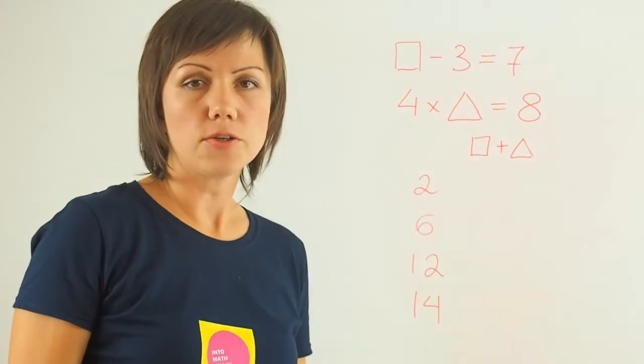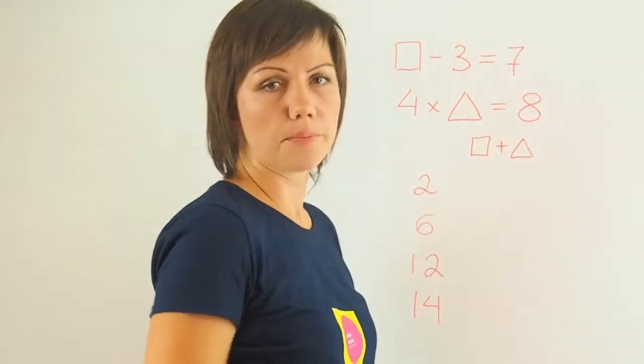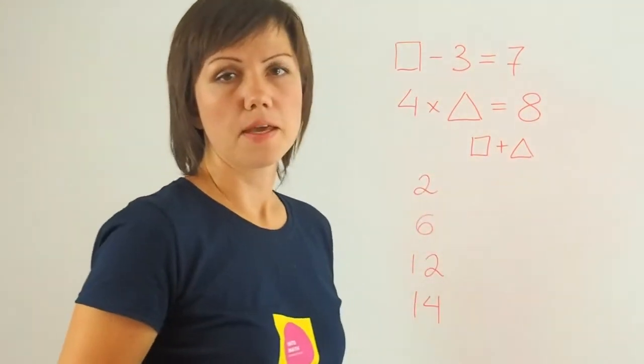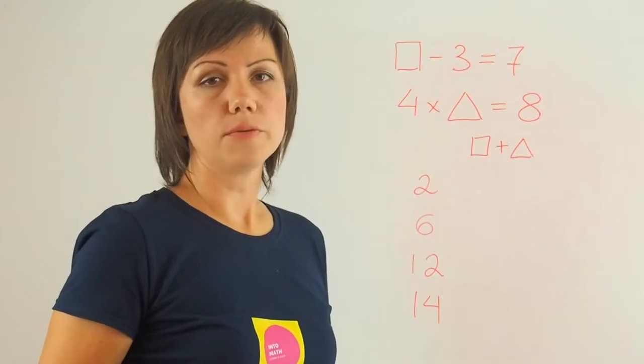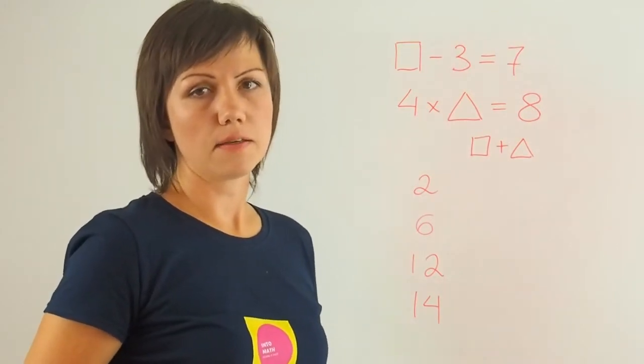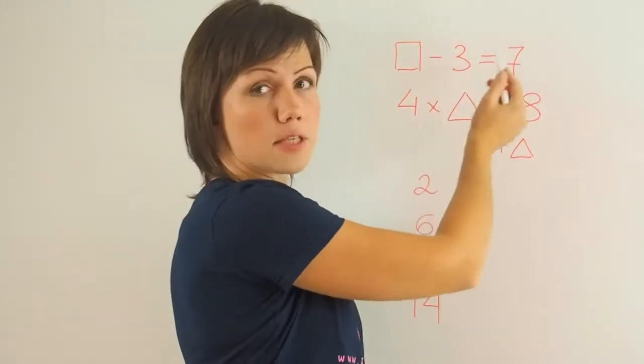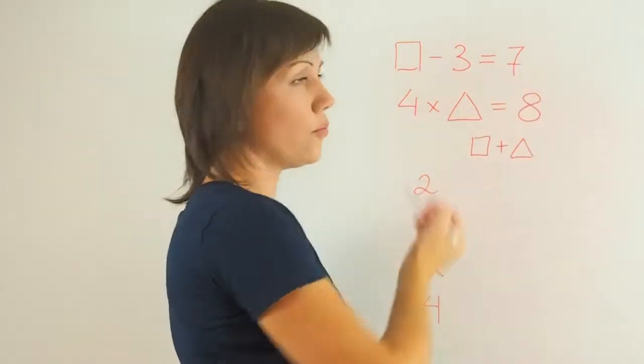In this question, you're being asked to find the sum of the two missing numbers from the given equations. First, you need to determine what those numbers are in order to make the equations balanced. So these numbers need to satisfy the equation, meaning the left side needs to equal the right side. Let's start with the top one.